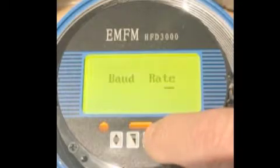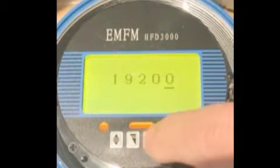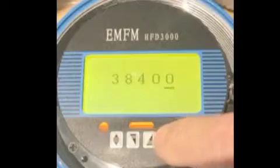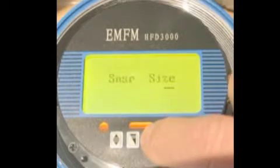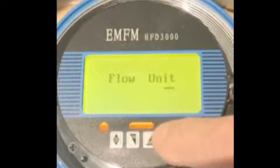So enter and we can look at the baud rate, 19.2, 38.4. We can see what's available. In here, we look at the baud rate, sensor size, flow unit.